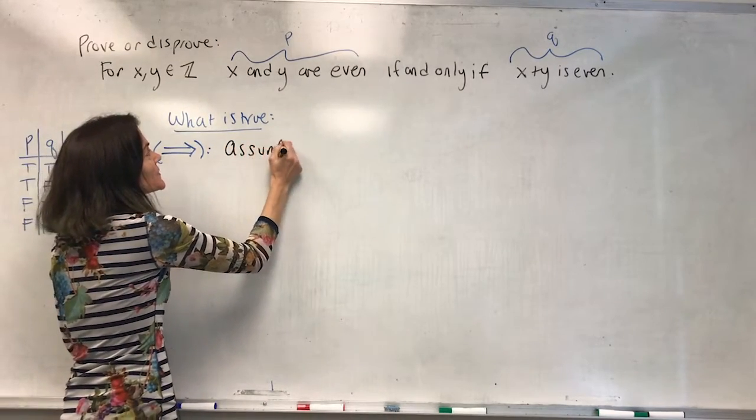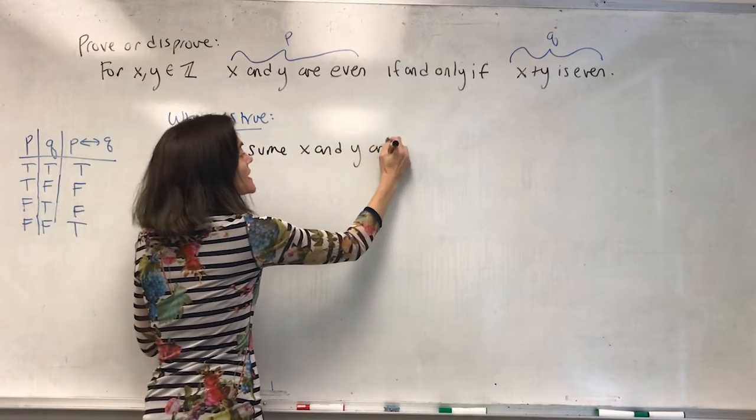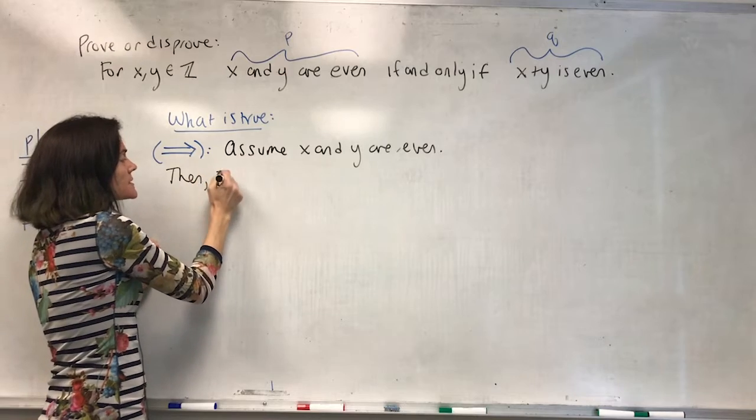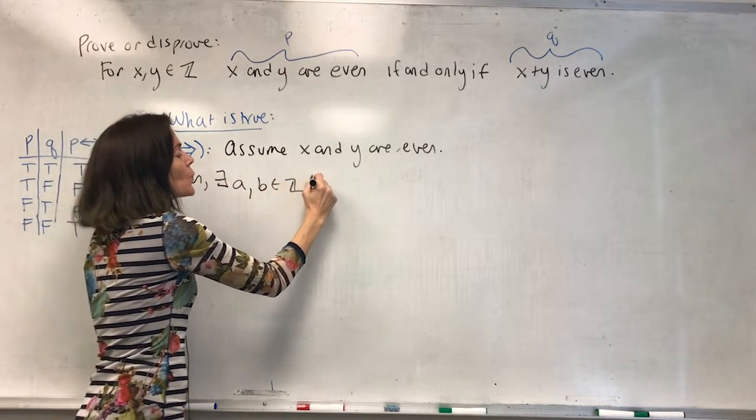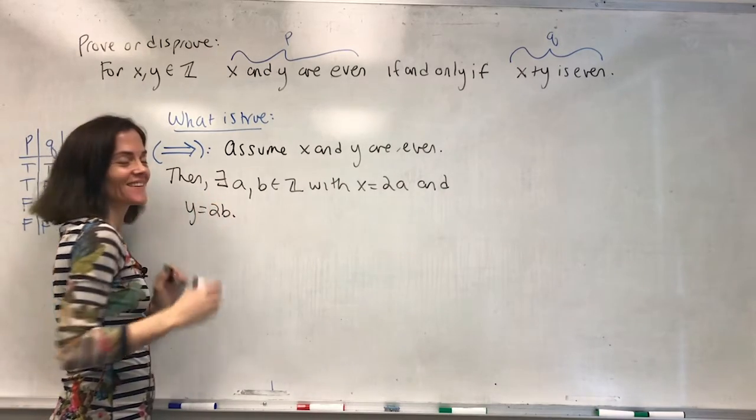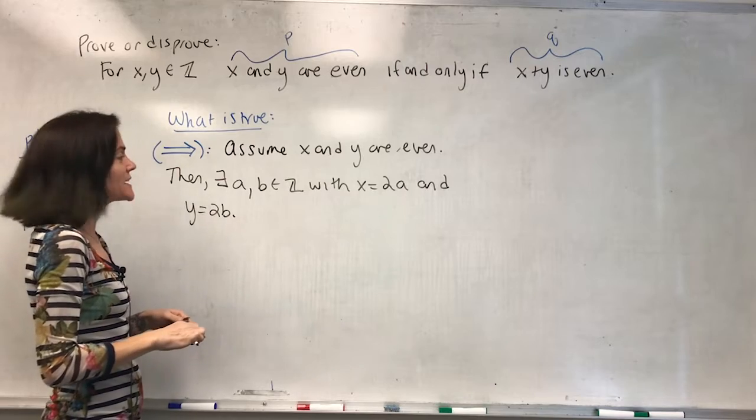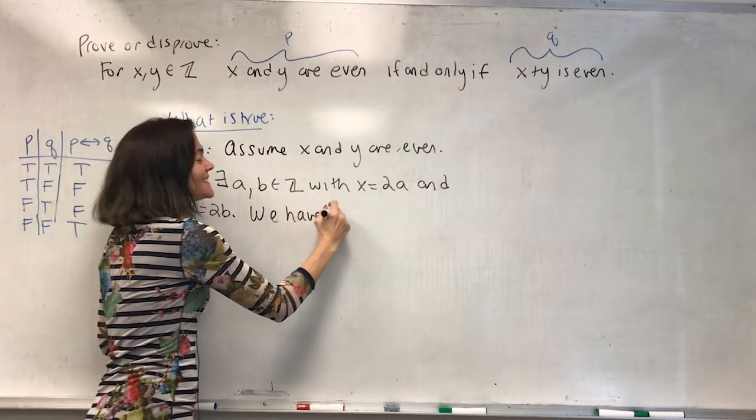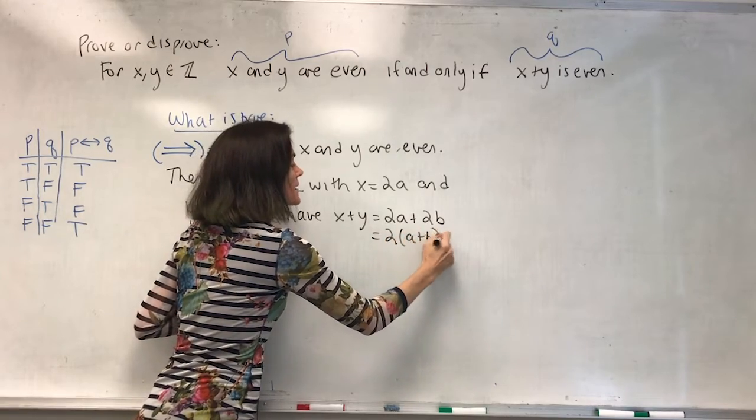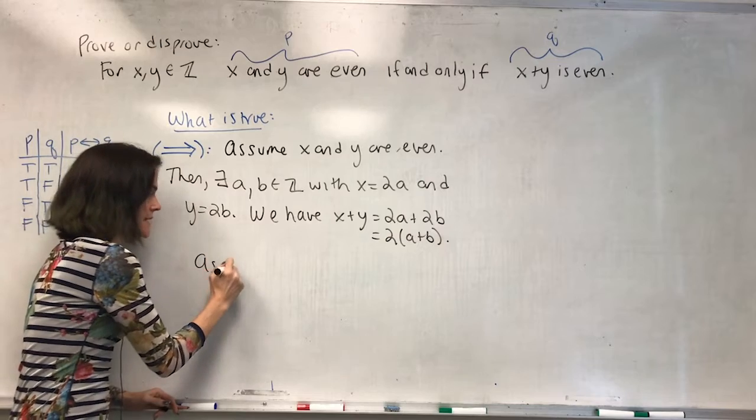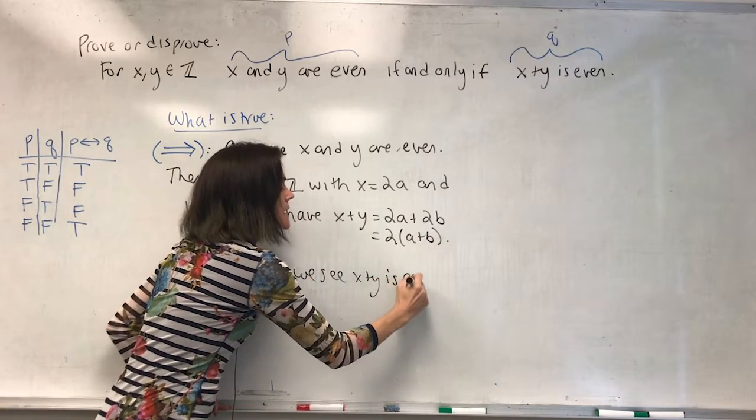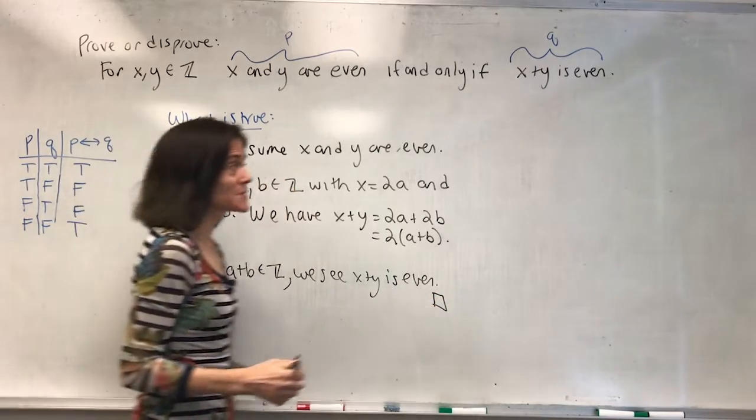One direction is true. I will go ahead and prove that is the following, which says this direction. Let's prove this. And then I will comment this doesn't prove the if and only if. It only proves one direction. We will assume x and y are even. So then there exists, let's say, a, b integers with x is 2a and y is 2b. If we want to get the sum x plus y even, we just add. We have x plus y, which is 2a plus 2b, and this is 2(a plus b).